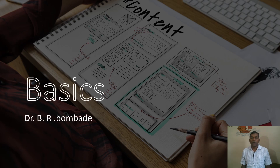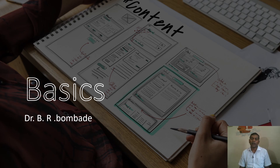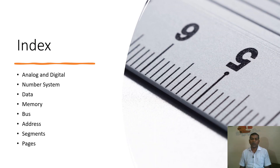Hello students. Today we will learn some of the basics which are really required for understanding microprocessors and interfacing. We will be going through details like analog and digital systems, number systems, data, memory, buses, addresses, segments, and some part of pages.